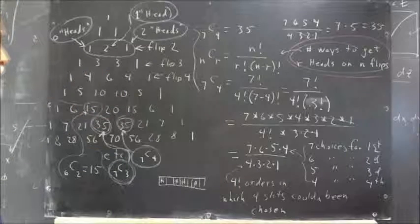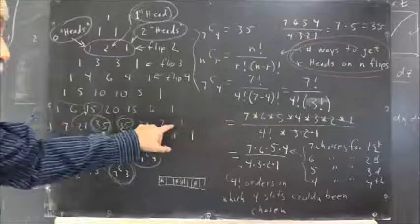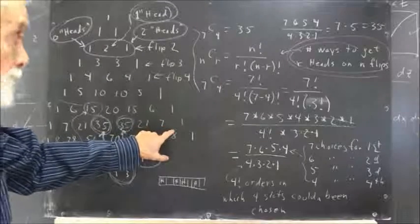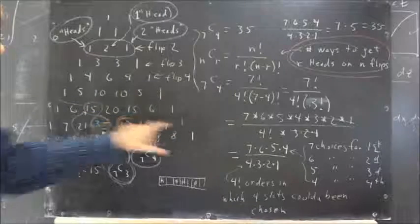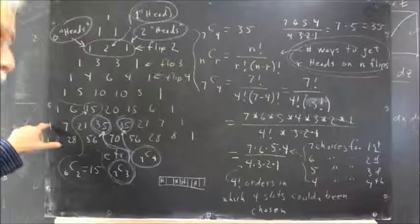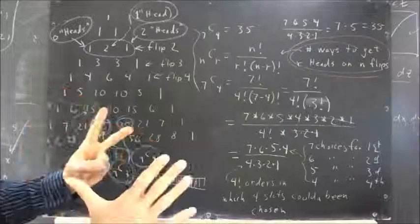This continues on until we get down to, let's say, this row. Well, what does that correspond to? That corresponds to flipping, well, this is flipping 4, so this would be 5. This row would be 6. This row would be the row corresponding to flipping 7 coins. So we get 7 coins.